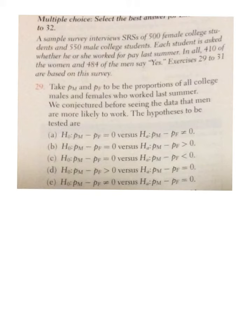Okay, number 29. The proportion of men and the proportion of women who worked over the summer. Now, they want to know the hypotheses. Let's see, what are we going to do?